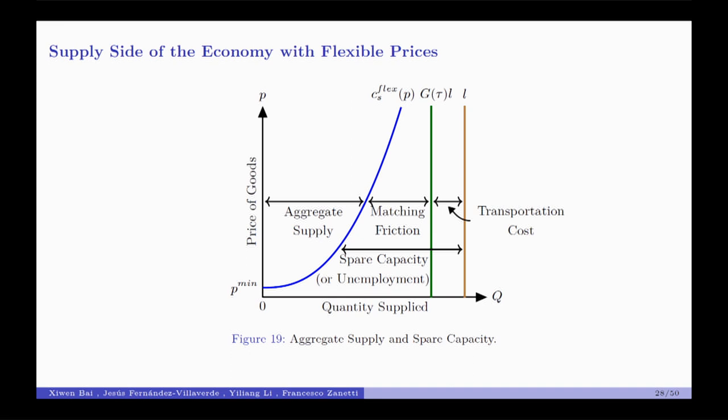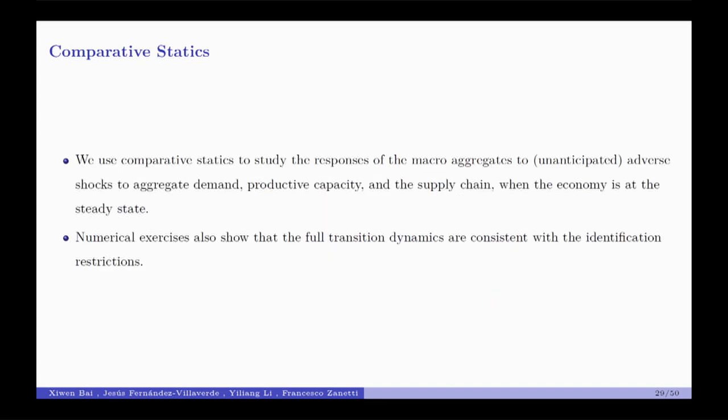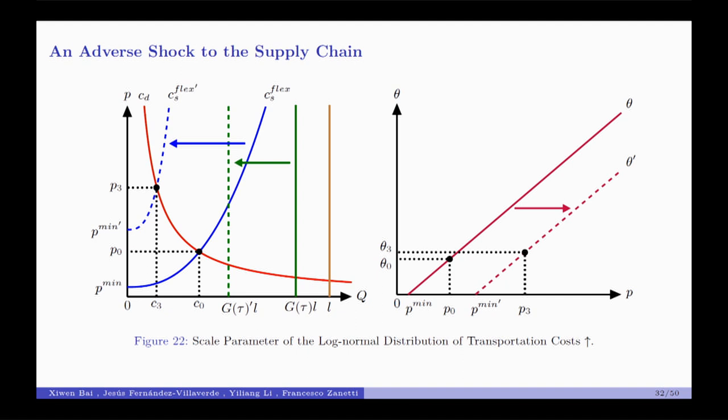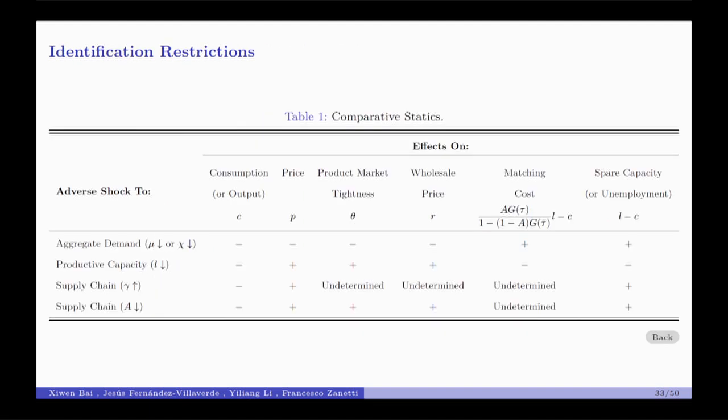The key features are matching frictions and the separation of producer and retailer matches based on transportation costs. These give us a supply curve with wedges between a theoretical upper bound and aggregate supply — essentially spare capacity. We derive comparative statics from the model. With three shock types — aggregate demand, productive capacity, and supply chain — just looking at the signs of impacts on consumption, price, and spare capacity, we can distinguish these three types of shocks.